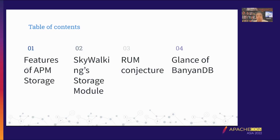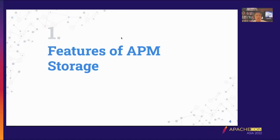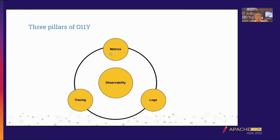Let's talk about the features of APM storage. First, let's review the three pillars of observability: metrics, traces, and logs. An APM system is a monitoring and analytics platform combining all three pillars. It's a unified platform enabling full visibility across your entire tech stack — collecting and visualizing metrics, setting up alerts for potential issues, and providing insights into the performance and health of your system.